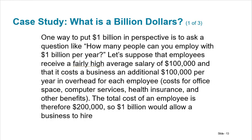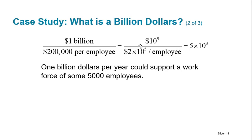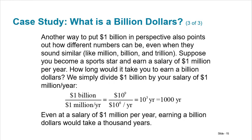Our last example. One way to put $1 billion in perspective is to ask a question like how many people can you employ with $1 billion per year? And let's suppose that employees receive a very high average salary of $100,000 and that cost a business an extra $100,000 per year in overhead for each employee. Costs for the office space, computer services, health insurance benefits and all that stuff. So total cost of employee is therefore $200,000. So $1 billion would allow a business to hire, well, you take $1 billion divided by $200,000 per employee. $1 billion is 10^9. This is 2×10^5. So we basically get 5×10^3 or $1 billion per year could support a workforce of 5,000 employees. So you start to see how big $1 billion is.